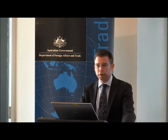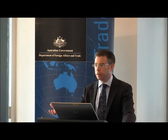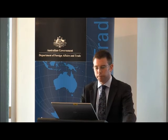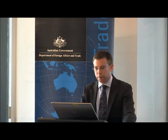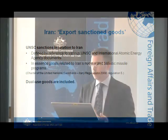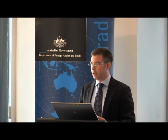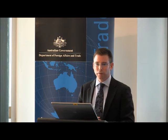That definition rather begs the question of what is an export sanctioned good — there are some differences for UNSC sanctions compared to autonomous sanctions. For UNSC sanctions in relation to Iran, export sanctioned goods are defined by reference to various UNSC and International Atomic Energy Agency documents, which you can find listed on our website or in our legislation. In essence we're talking about goods related to Iran's nuclear and ballistic missile programs, including dual use goods.